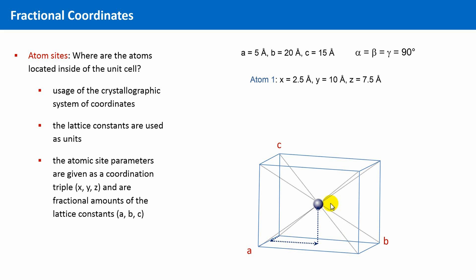This result would also be clear if we had compared the atomic site parameters, the absolute ones, with the lattice constants. They are all exactly half of the length of the lattice vectors a, b and c. And this is exactly the way fractional coordinates work. We divide the absolute coordinate values by the unit cell constants, and what we get are relative or fractional coordinates.